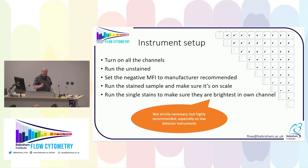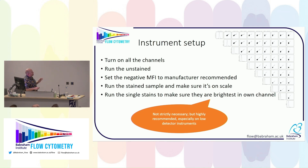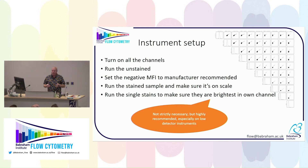If you want to do this yourself, it's really simple. Turn on all the channels. Run your unstained control and set a baseline setting — on the BD machines I love using the application setting worksheet to set the baselines. Put it to the negative region, whatever the manufacturer recommendation is. Run the same samples and make sure everything is on scale. On full spectrum flow cytometry, if things go off scale it's a disaster — never let anything go off scale.